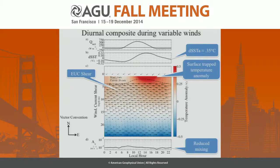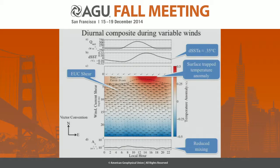We can contrast that to the variable wind conditions, where right away you'll notice that the temperature anomaly is strongly surface-trapped. It also persists later in the day, allowing these larger amplitude one-meter signals to build — and notably this is despite the net surface heat flux being reduced during this time because of cloudiness associated with the ITCZ. This really suggests the first-order role that ocean mixing is playing in controlling the diurnal SST amplitude. The mixed layer is shallow throughout the diurnal cycle, eddy viscosity is reduced approximately an order of magnitude, and there's very little evidence of a diurnal cycle of mixing.